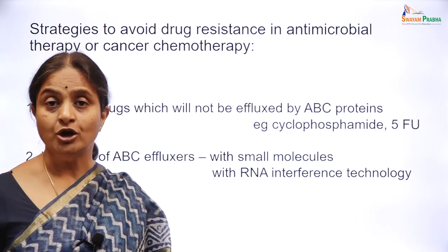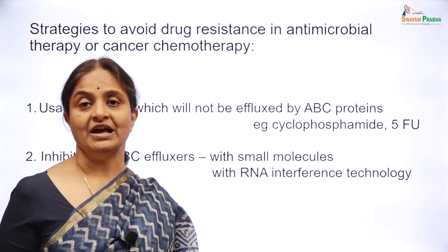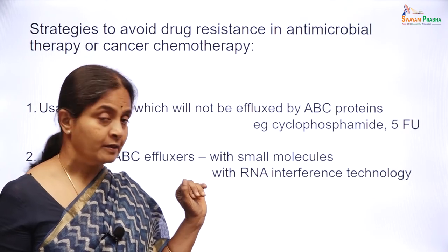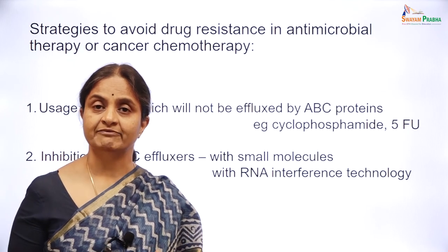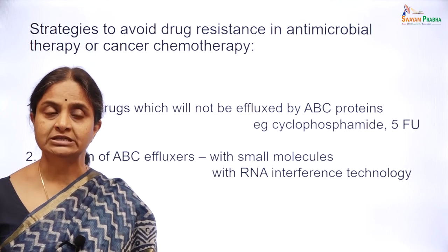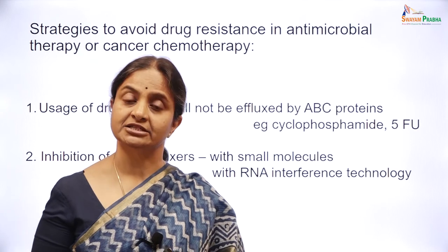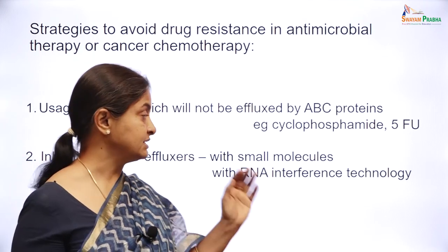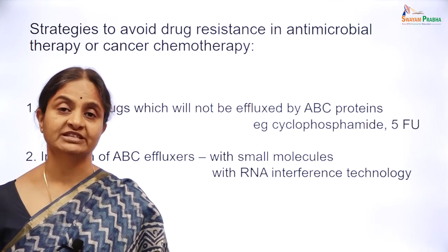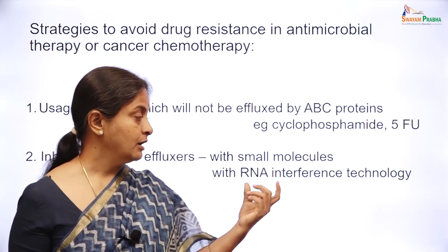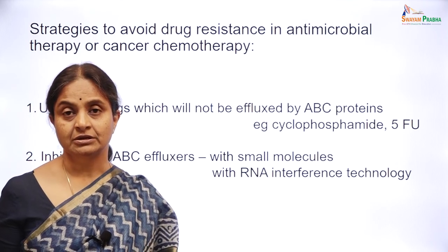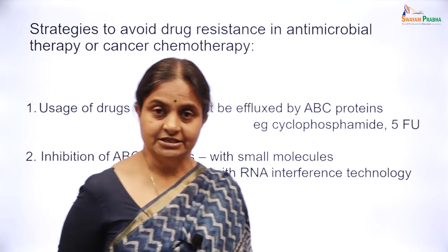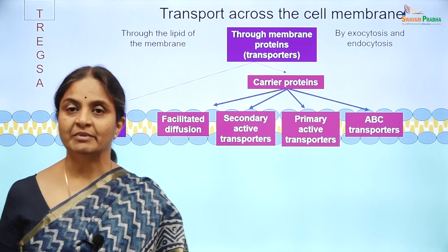Attempts to inhibit ABC exporters with small molecules have largely failed in clinical trials despite promising animal study results, according to Wikipedia. However, a more recent strategy is RNA interference to prevent these efflux proteins from pushing out chemotherapeutic drugs.